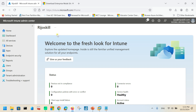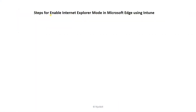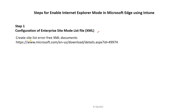Let me show you the steps. Step one is configuring the enterprise site mode list in XML format. To do this, we need to go to a specific link and download the Enterprise Mode Site List Creator application.